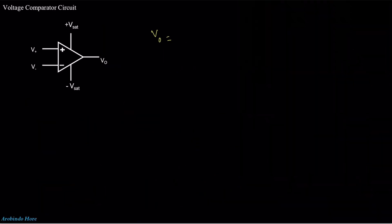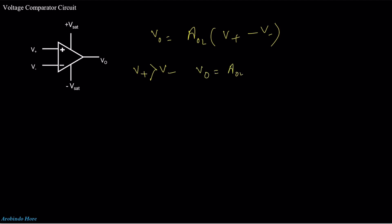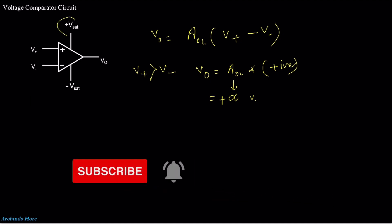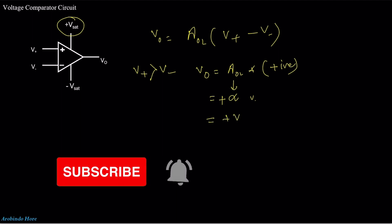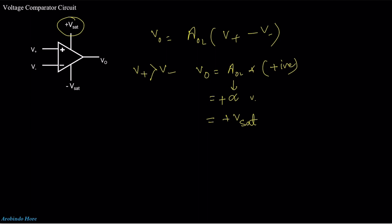Using the equation V0 = Aol·(V-plus minus V-minus): if V-plus is greater than V-minus, then V0 = Aol × (positive value). Since Aol is infinite, we'd get positive infinite voltage — but an op-amp cannot output infinite voltage. So the output will be the maximum supply voltage, which is the positive saturation voltage, plus V-sat.